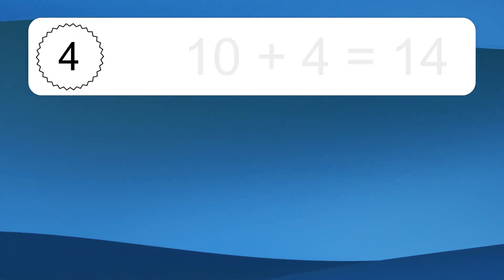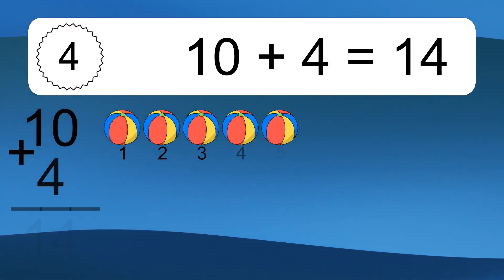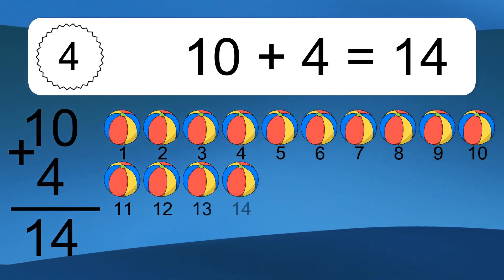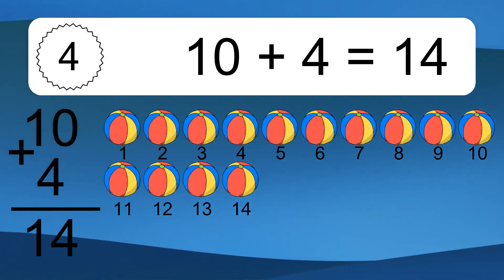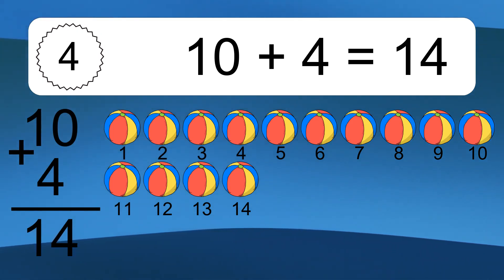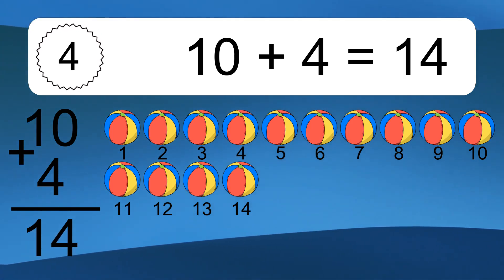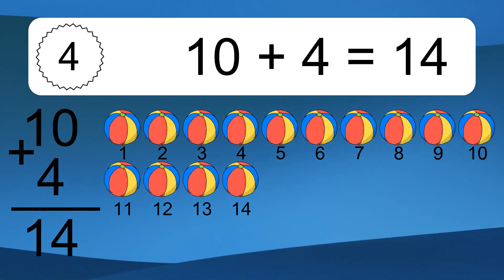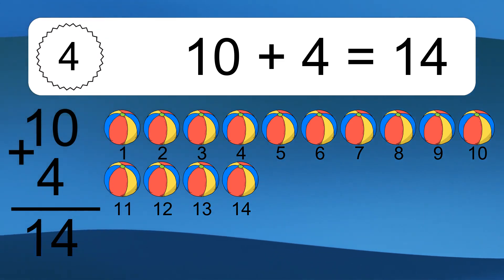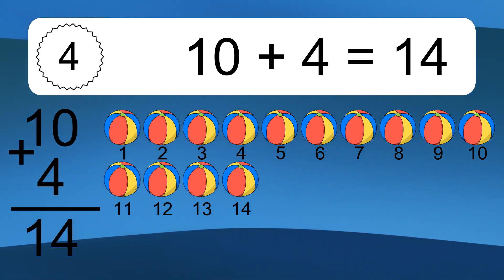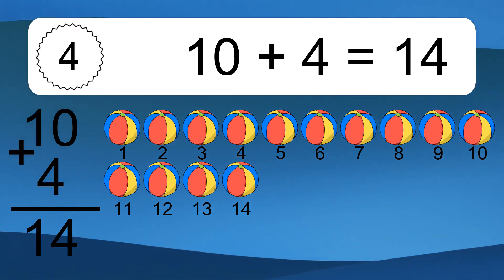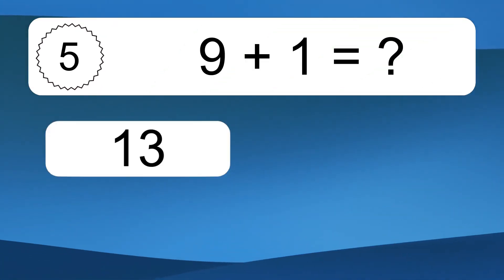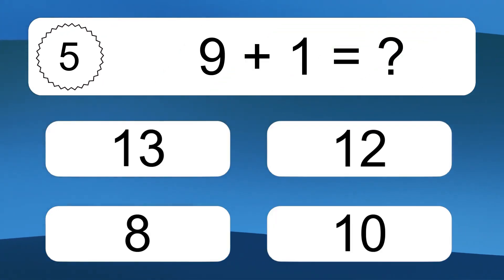Ten plus four equals what? Ten plus four equals fourteen. Let's count it: one, two, three, four, five, six, seven, eight, nine, ten, eleven, twelve, thirteen, fourteen.